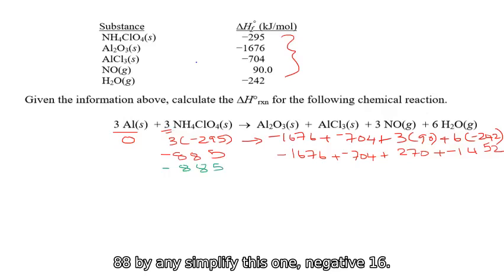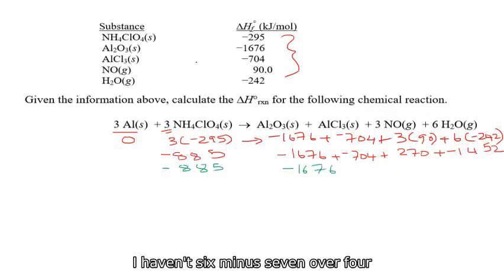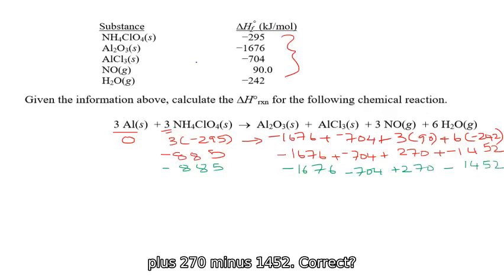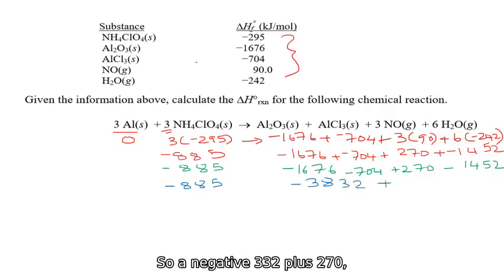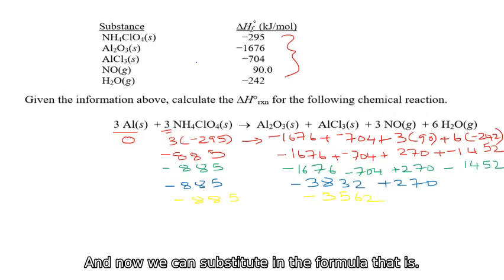And this is going to be negative 1676. And this is negative 704 plus 270 plus negative 1452. Simplify that one again. So that will be negative 885. And you simplify this one. Negative 1676 minus 704 plus 270 minus 1452.